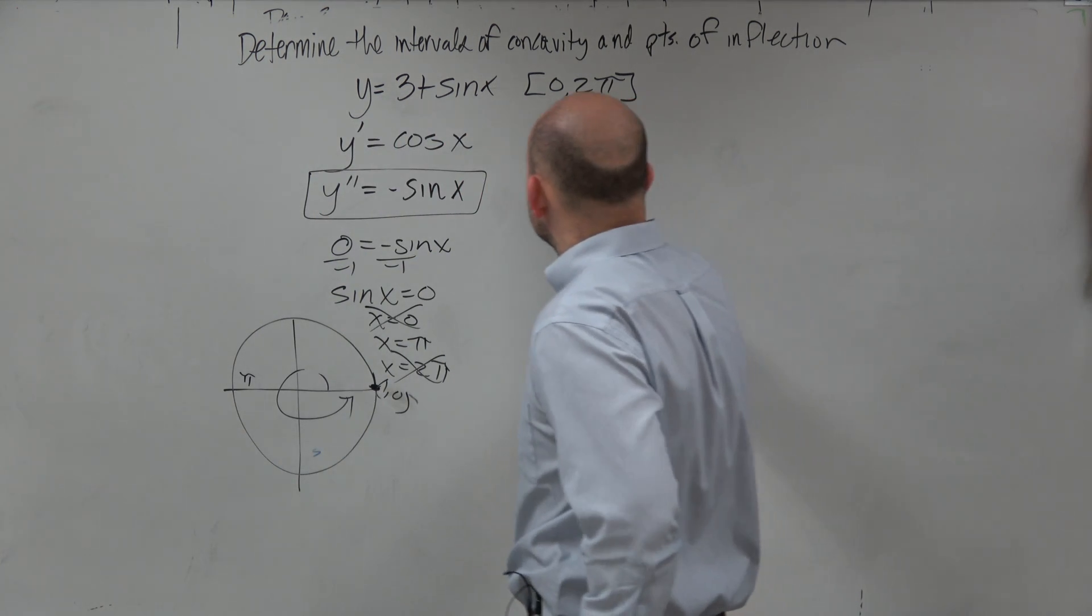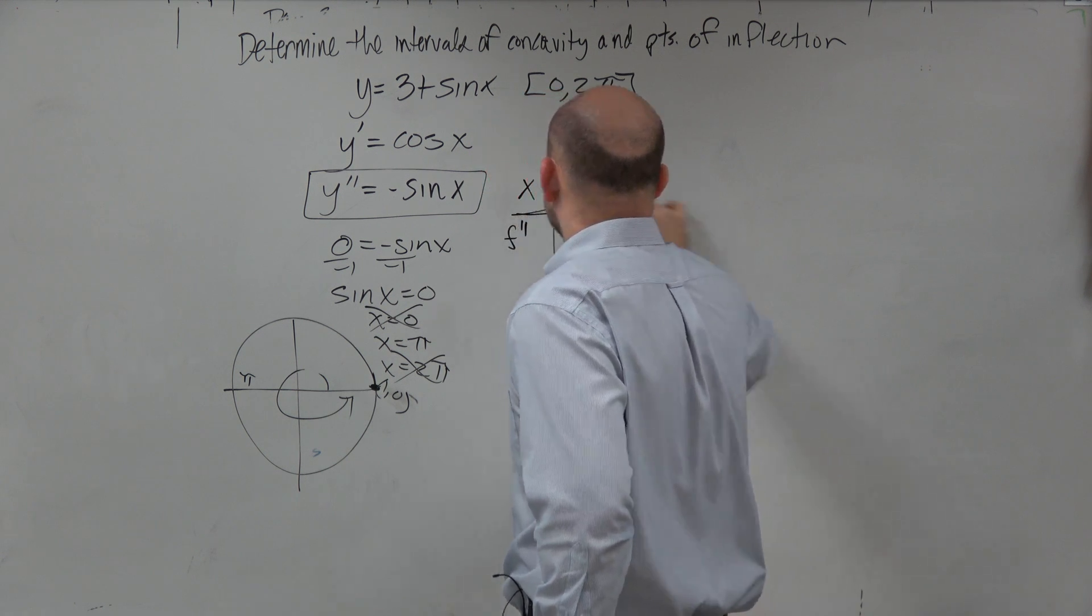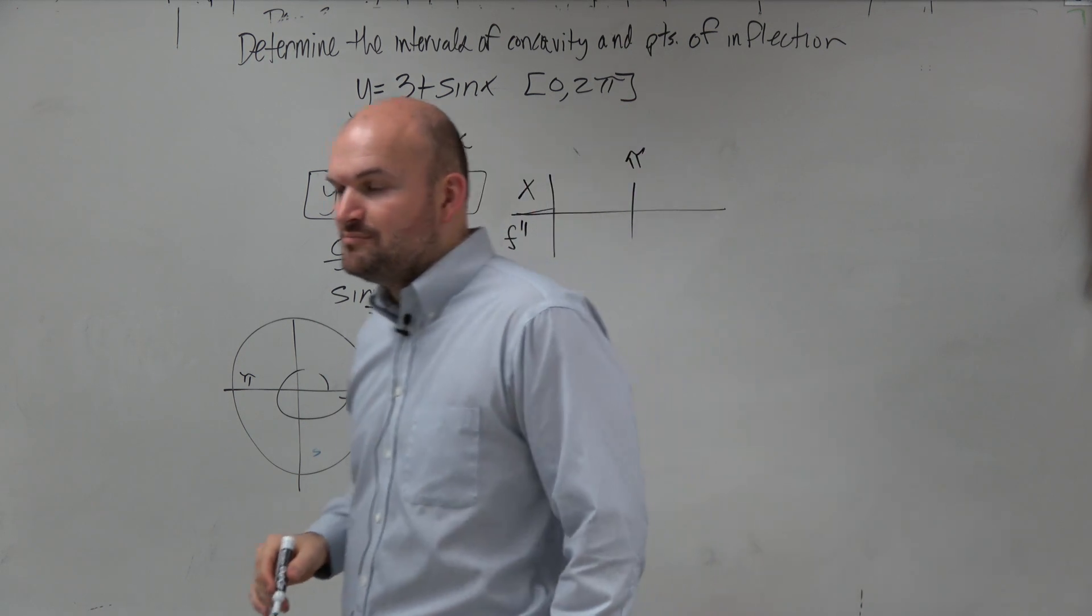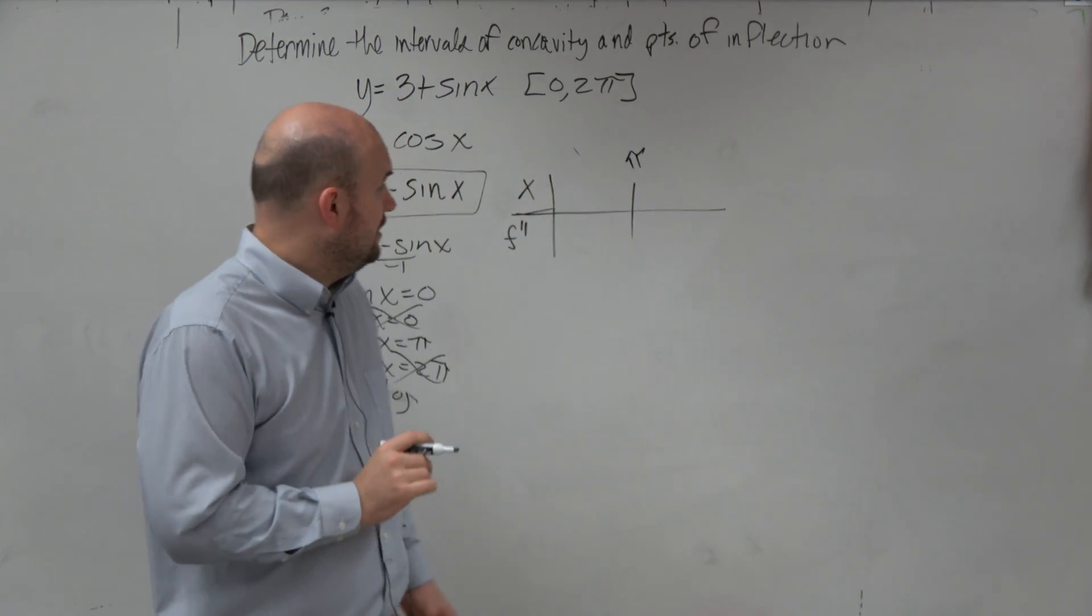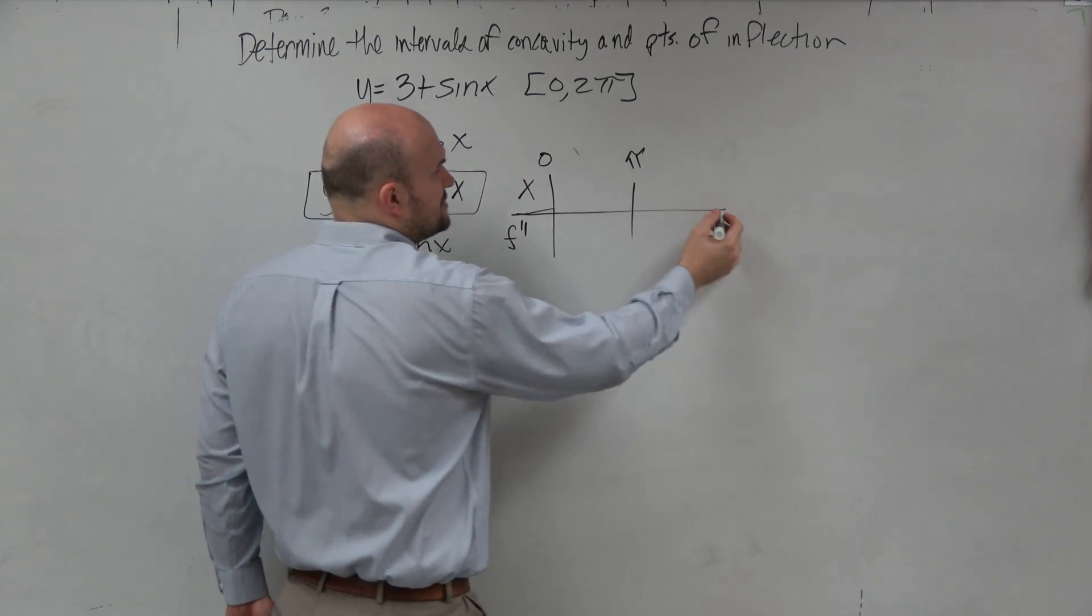We only need to worry about x is equal to pi. So now we go into our table. We know that our possible point of inflection is at pi. And now let's just check a point to the left and to the right.